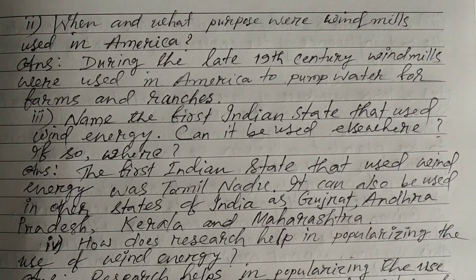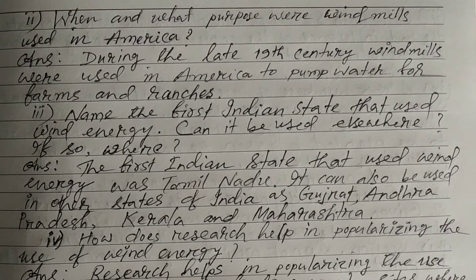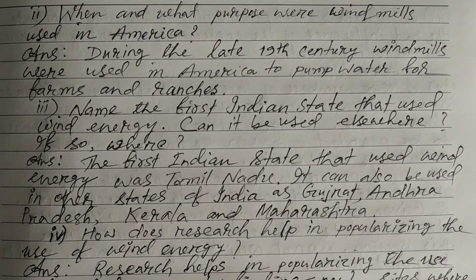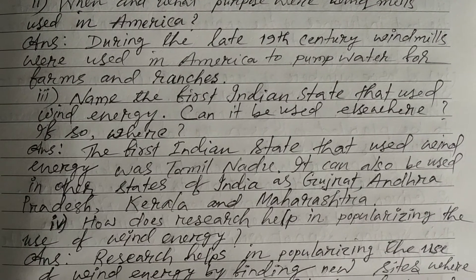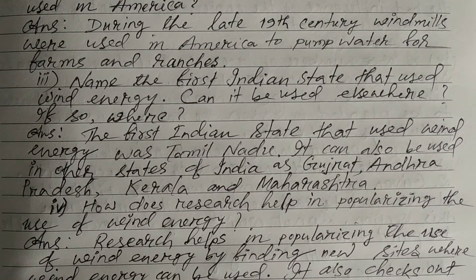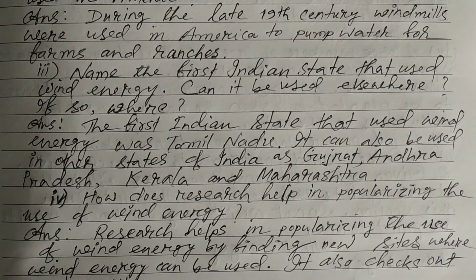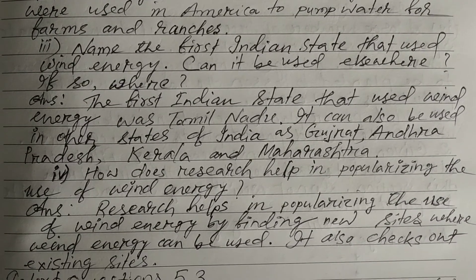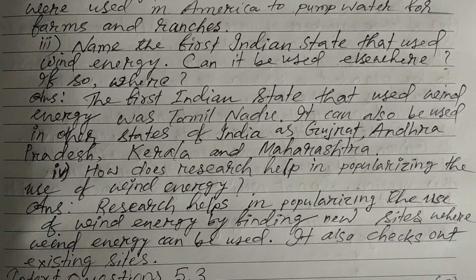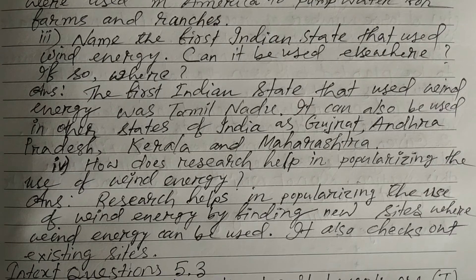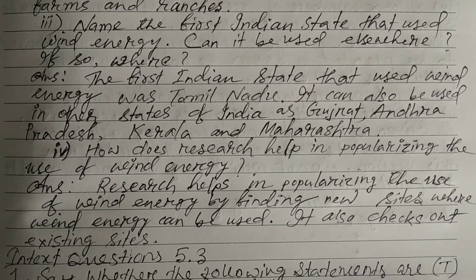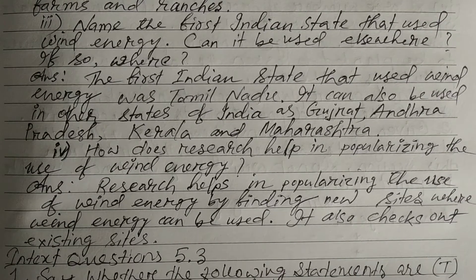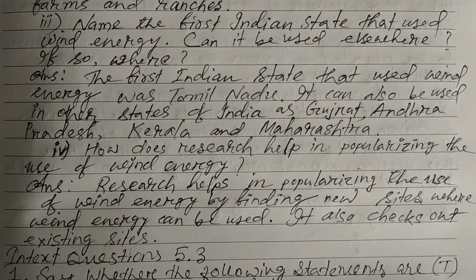Question 3: Name the first Indian state that used wind energy. Can it be used elsewhere? If so, where? Answer: The first Indian state that used wind energy was Tamil Nadu. It can also be used in other states of India such as Gujarat, Andhra Pradesh, Kerala, and Maharashtra.